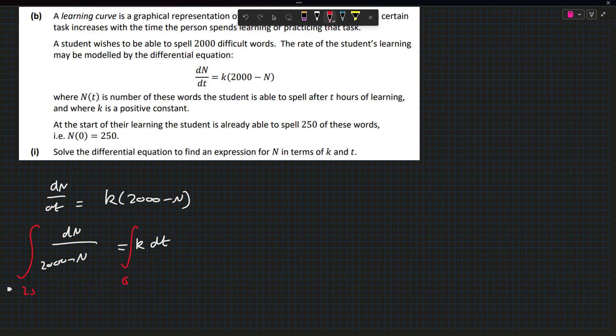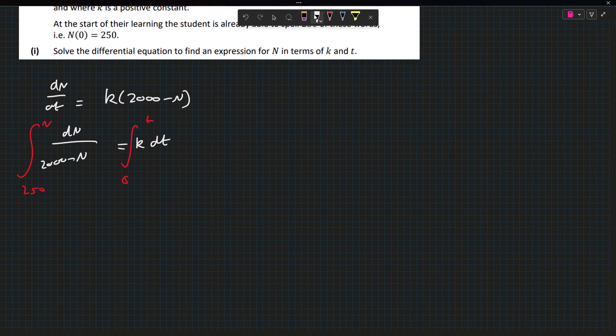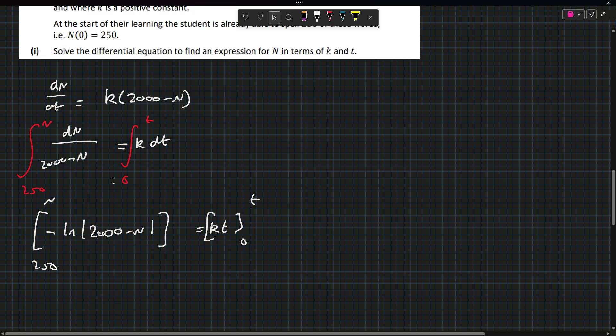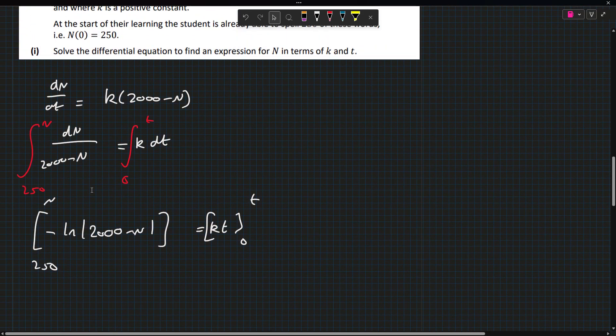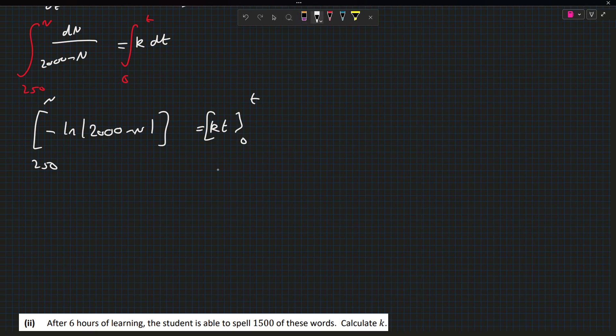So initially it's 250 and we're looking for n and k, or about t rather. So here, if we differentiate the bottom, we get a factor of minus one out of the front. So there's going to be minus. It's going to be in the thing. So minus log of 2000 minus n, evaluated between 250 and n, equals kt evaluated between 0 and t. So this is more things where I don't have enough room.